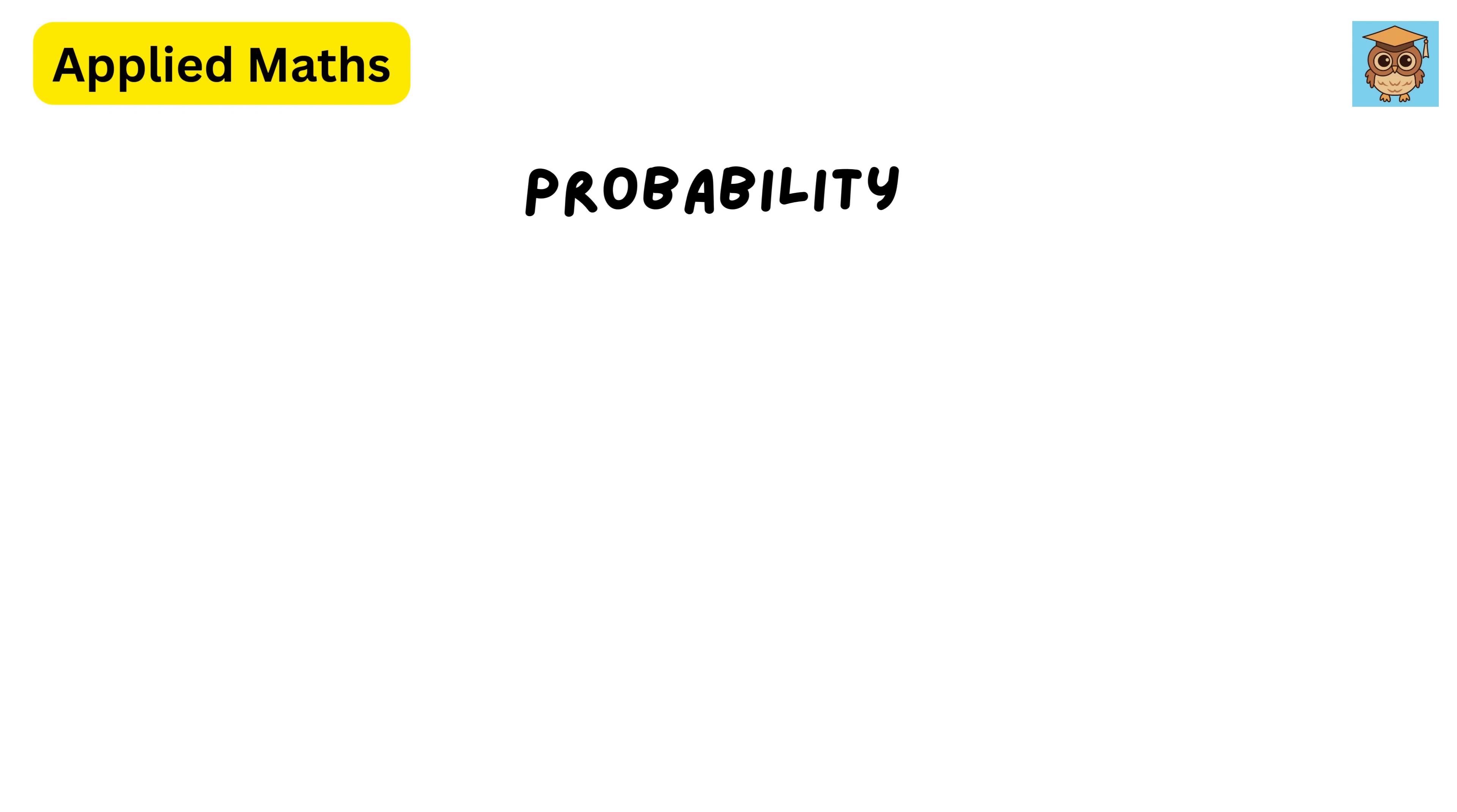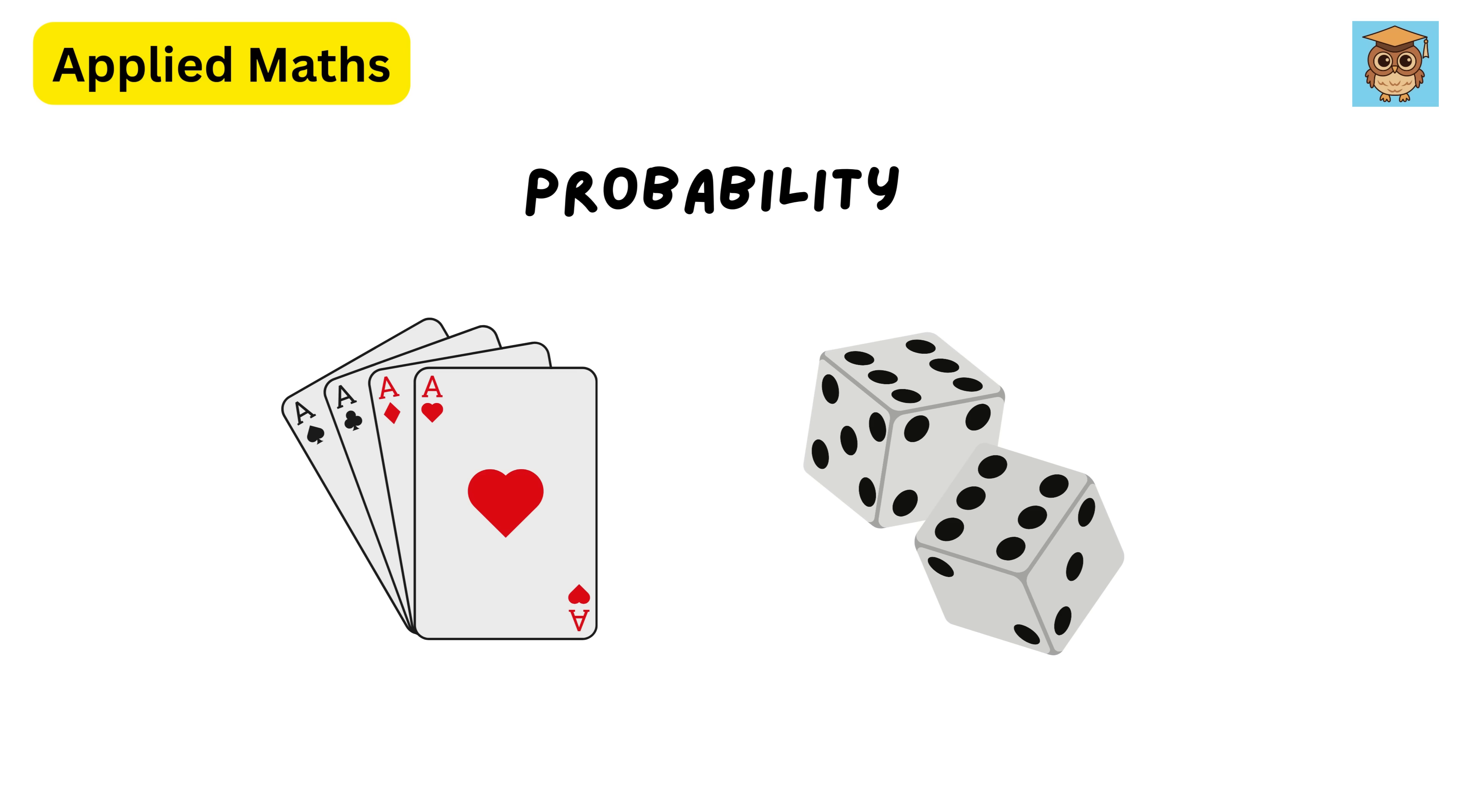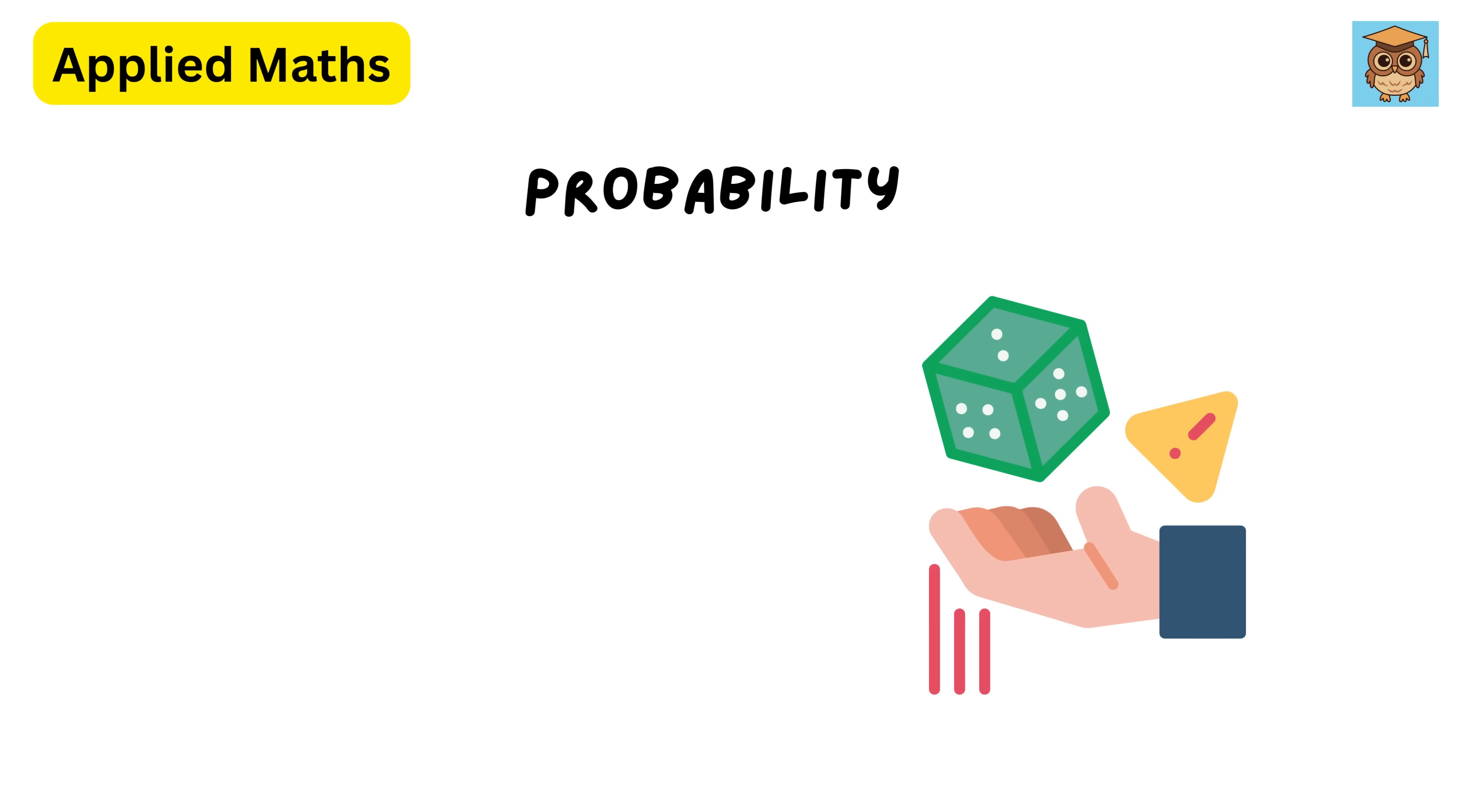Then we have probability. Probability is the measure of how likely an event is to happen. It tells us how uncertain or certain something is using a scale from zero to one, where zero means impossible and one means 100 percent certain.